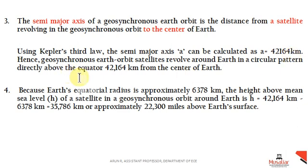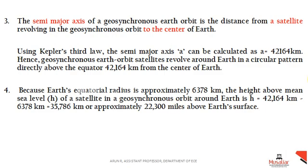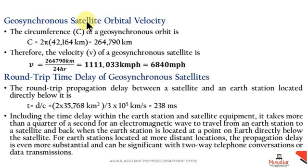A geosynchronous satellite revolves around the earth in a circular pattern directly above the equator at 42,164 kilometers from the center of the earth. The earth's equatorial radius is approximately 6,378 kilometers, and from this we can determine the height required to place the geosynchronous satellite above earth. For orbital velocity, we calculate the circumference of orbit as C = 2πr, where r = 42,164 km, and then divide by the orbital time of 24 hours to calculate the geosynchronous satellite orbital velocity.